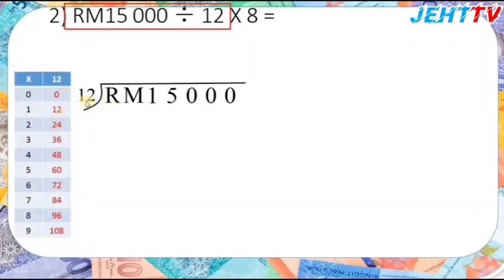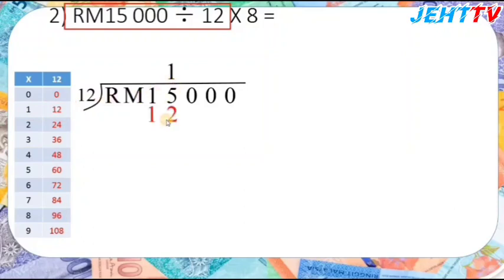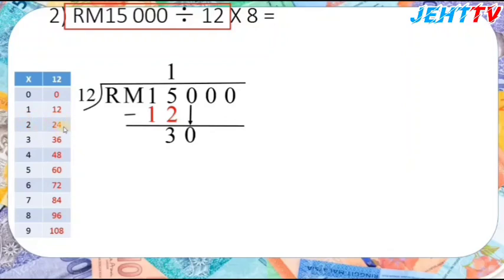Because 12 is a 2-digit number, we look directly at the 2-digit portion: 15. Is there 15 in the 12 times table? No, but less than 15 is 12, so 12 times 1 equals 12. Then 15 minus 12 equals 3. Bring down the 0 to get 30. Smaller than 30 is 24, so 12 times 2 equals 24.